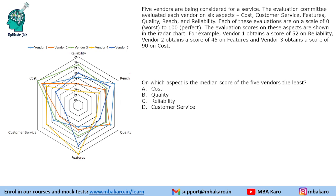The problem says five vendors are being considered for a service. The evaluation committee evaluated each vendor on six aspects. There are five vendors — vendor one through five — and each evaluation is on a scale of zero to 100. The evaluation scores on these aspects are shown in the radar chart.